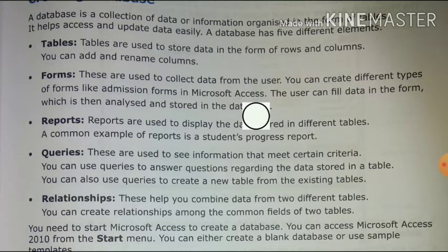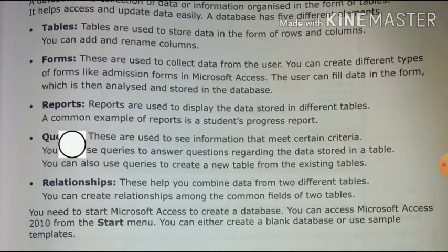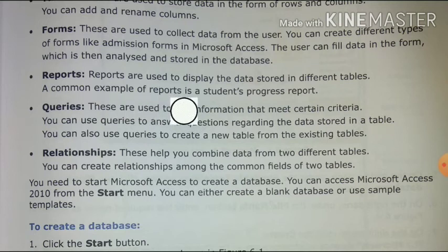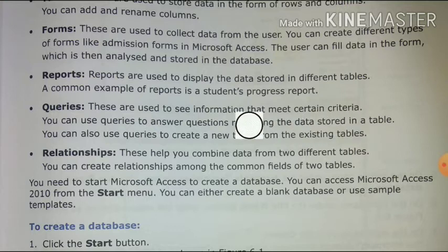The user can fill data in a form, which is then analyzed and stored in the database. Next is Reports. Reports are used to display the data stored in different tables. A common example of a report is a student progress report. We can display reports in a more efficient way. Next: Queries. These are used to see information that meets certain criteria. You can use queries to answer questions regarding the data stored in a table.